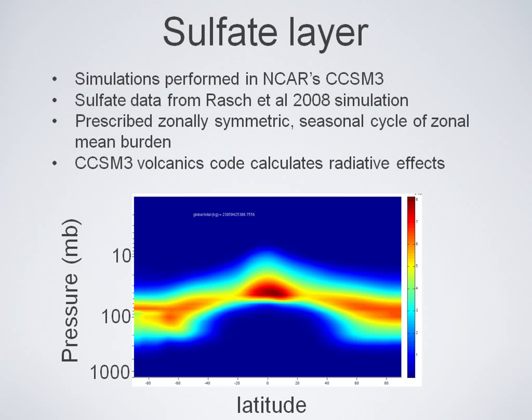To do this, I ran a global climate model — NCAR's CCSM-3. To simulate stratospheric sulfate aerosols, I prescribed a burden of sulfate. This data I got from a study by Rash et al. in 2008, a simulation where they injected sulfur dioxide and let it interact with the stratosphere. CCSM-3 treats this prescribed burden as volcanic aerosol. Here's what the layer looks like — latitude by pressure — with a concentration maximum at the injection site from Phil Rash's simulation. These sulfates reflect shortwave radiation, letting less energy into the atmosphere and cooling the planet.